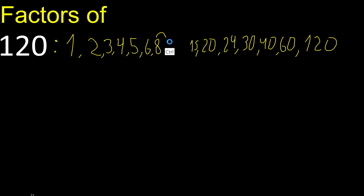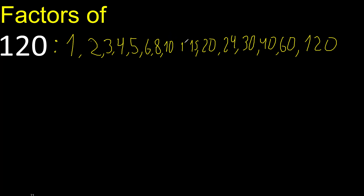Next, 9. 120 cannot be divided by 9. Next, 10. Divided by 10 is 12. Next, 11 cannot be divided by 11. Next, 12 — 12 is already here, so we're done.